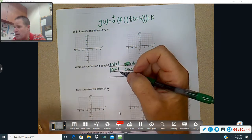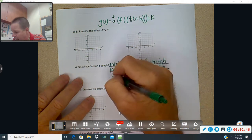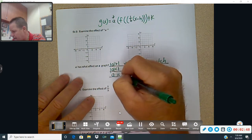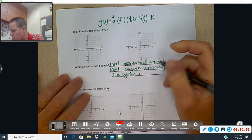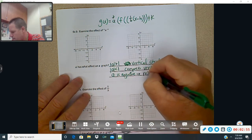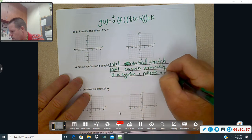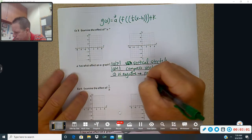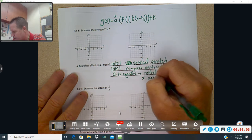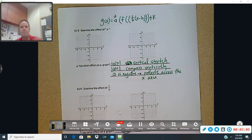Now, one thing that you need to look at is what if the A is negative? What is that going to do? That is going to reflect across the x-axis, OK? So it's going to flip it over.